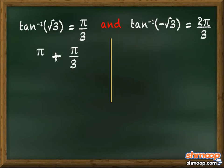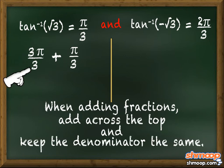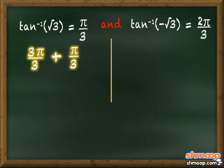To add π to π/3, we must first make sure both numbers have the same denominator. We can multiply 3/3 to π to make it have the common denominator of 3. When adding fractions, we add across the top and keep the denominator the same. So, 3π/3 + π/3 = 4π/3.